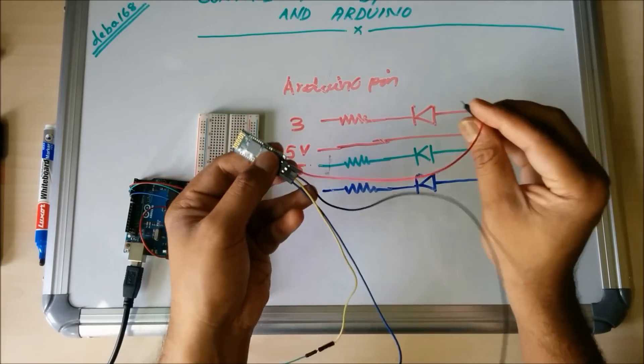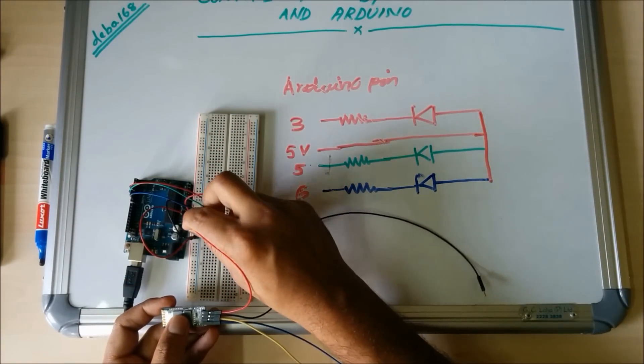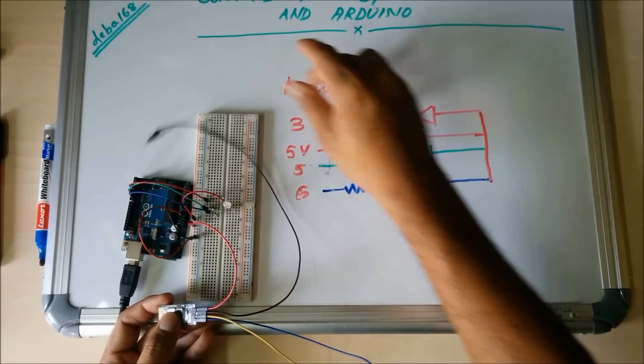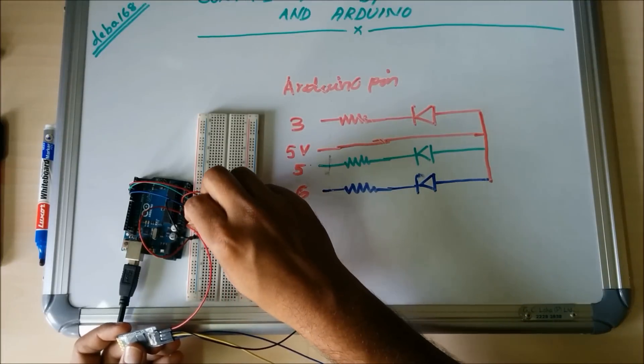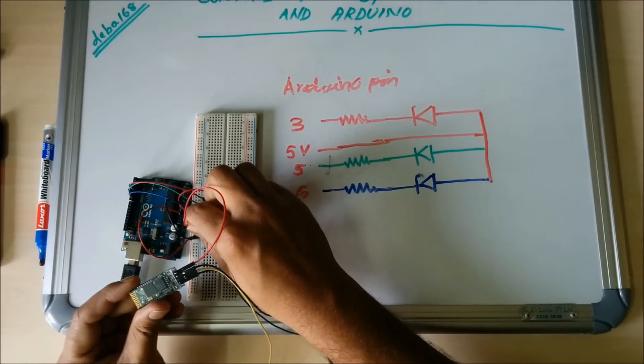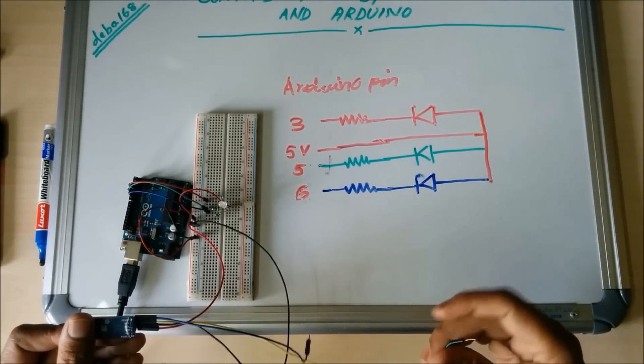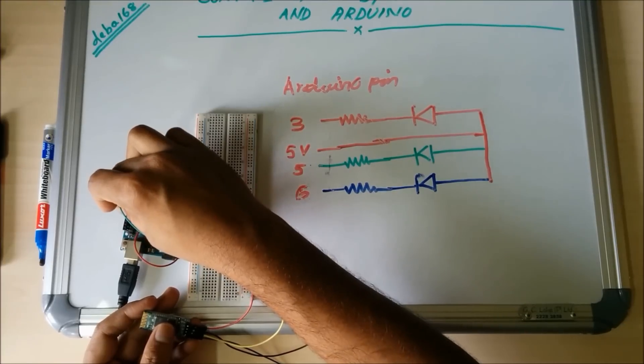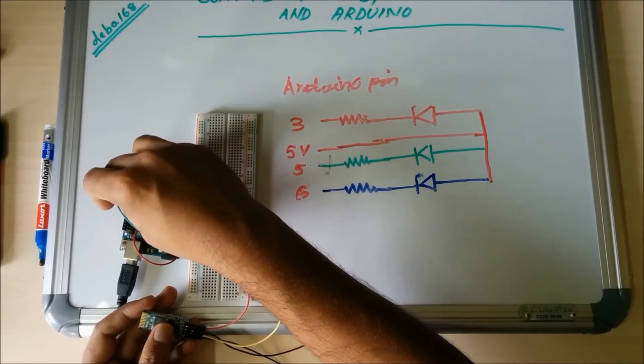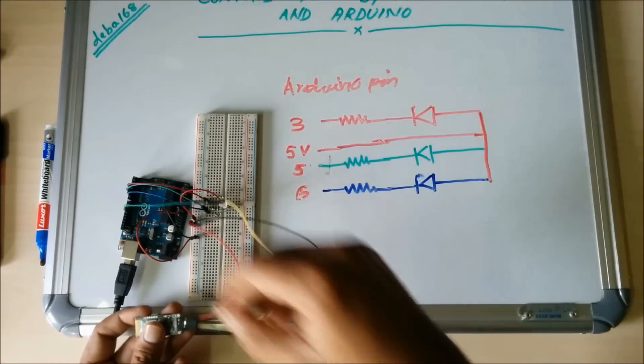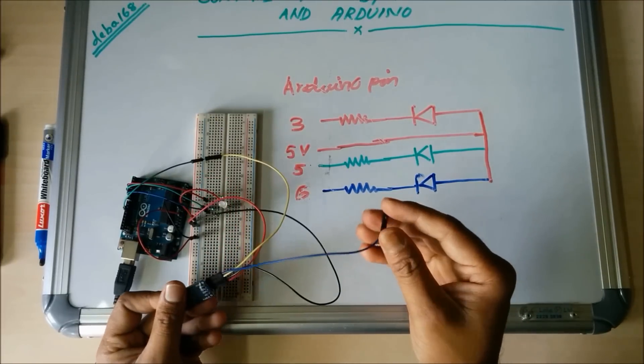The Bluetooth VCC pin should be connected to positive rail, the ground pin is connected to ground rail. TX pin is connected to pin number 11 and RX pin is connected to pin number 12.